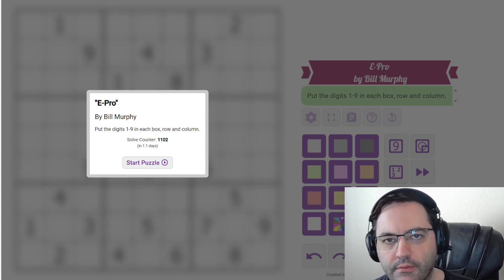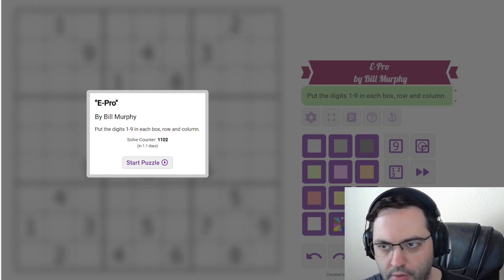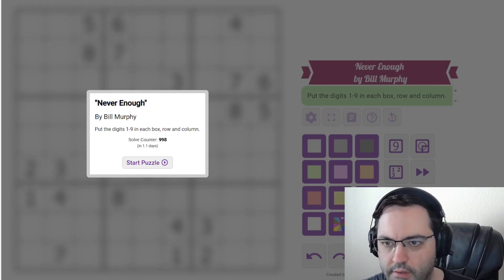Hi everyone, this is the Gas Walkthrough for April 21st. I'm Philip Newman. Today I'm solving two classic Sudoku by Bill Murphy. The first one is called E-Pro, and the second one is called Never Enough.